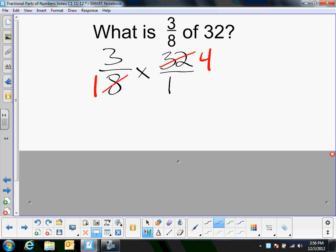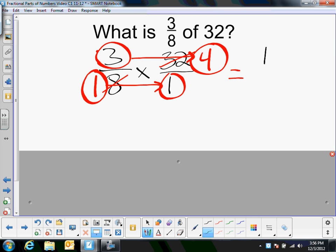I can't reduce eight and one anymore, so I'll just multiply my three, which is left, times my four, and then my one, which I got rid of the eight, times this one, which is still over here. And now my final answer is going to be three times four, which is 12 over one times one is one. And since it's over one, that's just 12.